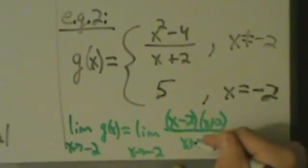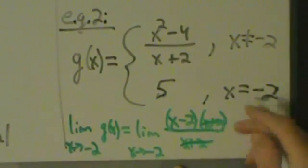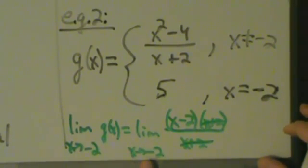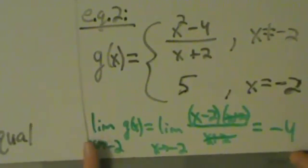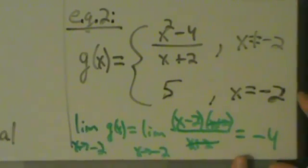So these x plus 2s here, let's zoom in a little bit. These x plus 2s here, they're going to cancel. So what we have is limit as x goes to negative 2 of x minus 2. And direct substitution tells us that's minus 2 minus 2, which is minus 4. So the limit as x goes to negative 2 of g(x) is negative 4.